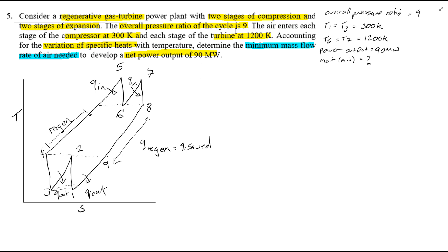It also enters each stage of the turbine at 1200K, so this is stages 5 and stages 7. I've drawn this diagram here.